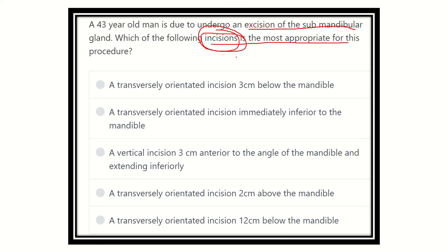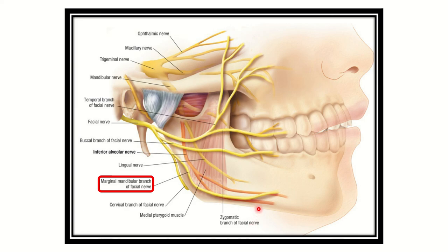The options are: A) a transversely oriented incision three centimeters below the mandible; B) a transversely oriented incision immediately inferior to the mandible; C) a vertical incision three centimeters anterior to the angle of the mandible extending inferiorly; D) a transversely oriented incision two centimeters above the mandible; E) a transversely oriented incision 12 centimeters below the mandible.